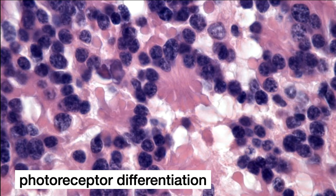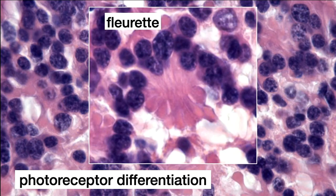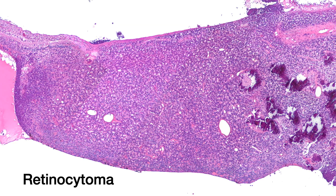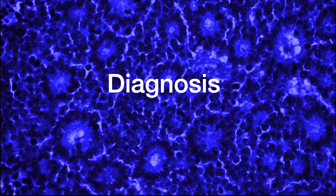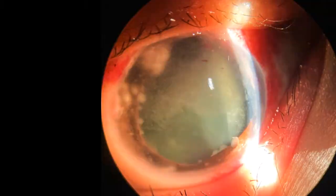Photoreceptor differentiation occurs in a benign variant of retinoblastoma called retinocytoma. The florets are composed of bundles of neoplastic photoreceptors, typically inner segments aligned along a segment of external limiting membrane. A tumor composed entirely of photoreceptor differentiation is termed a retinocytoma. Histopathology is vital for the accurate diagnosis of retinoblastoma, especially in cases with unusual clinical presentations.